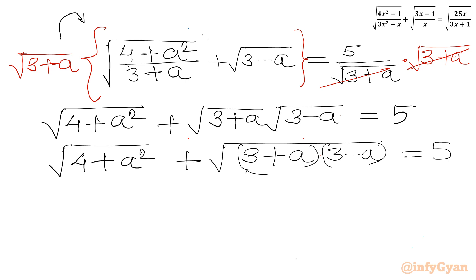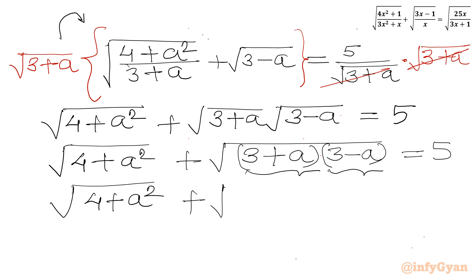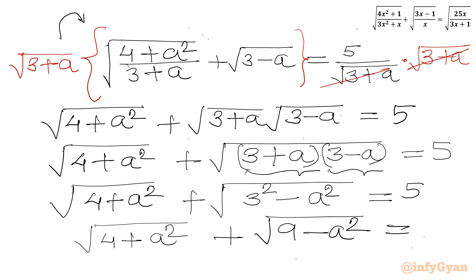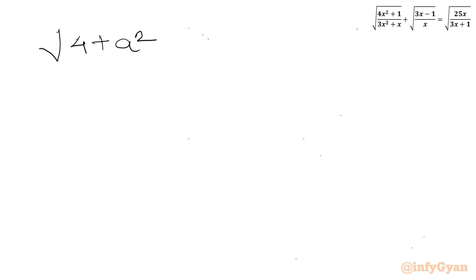Using the identity (a plus b)(a minus b) equals a² minus b², we get square root of (3 plus a) times square root of (3 minus a) equals square root of (9 minus a²). So we can write: square root of (4 plus a²) plus square root of (9 minus a²) equals 5.